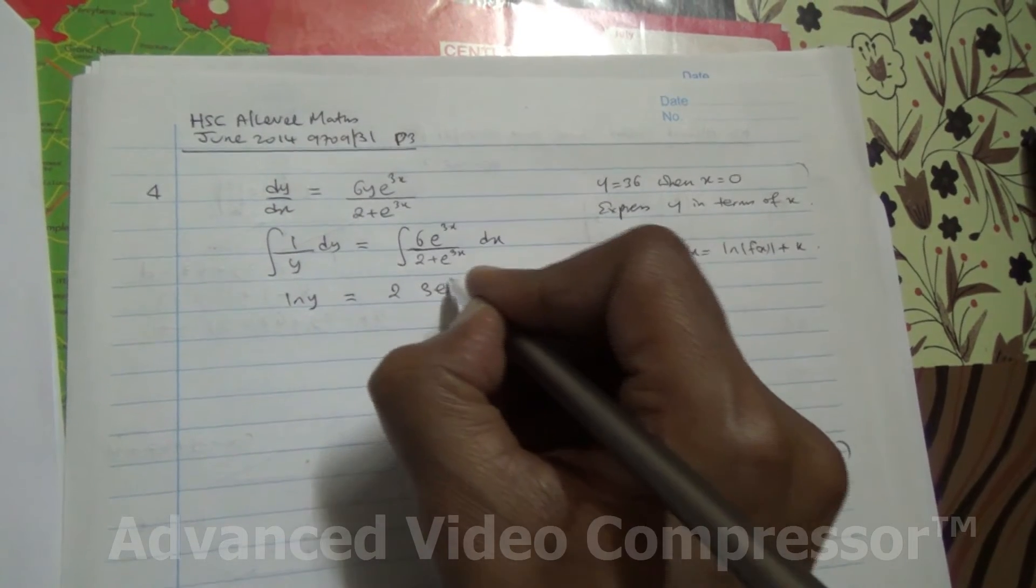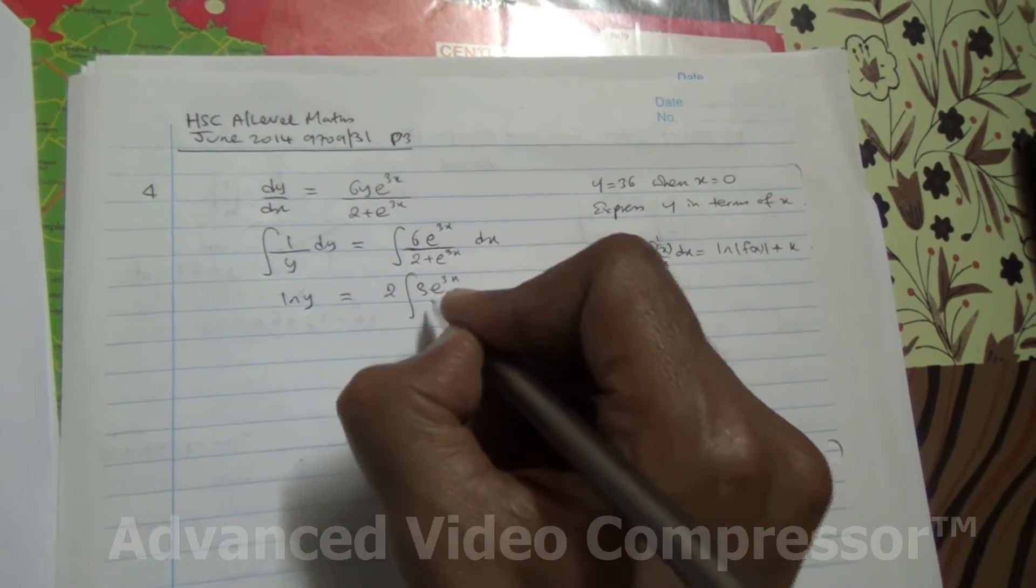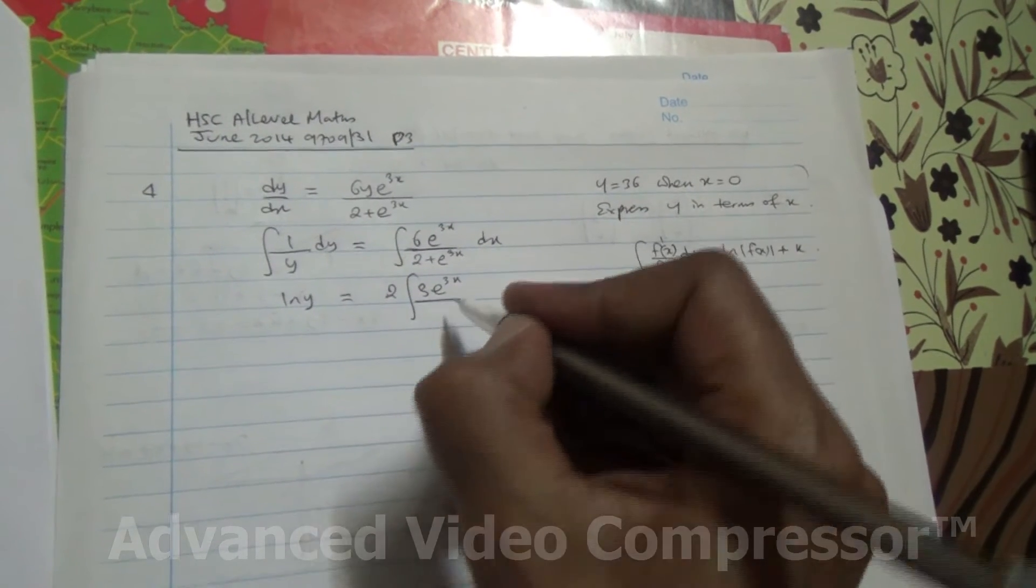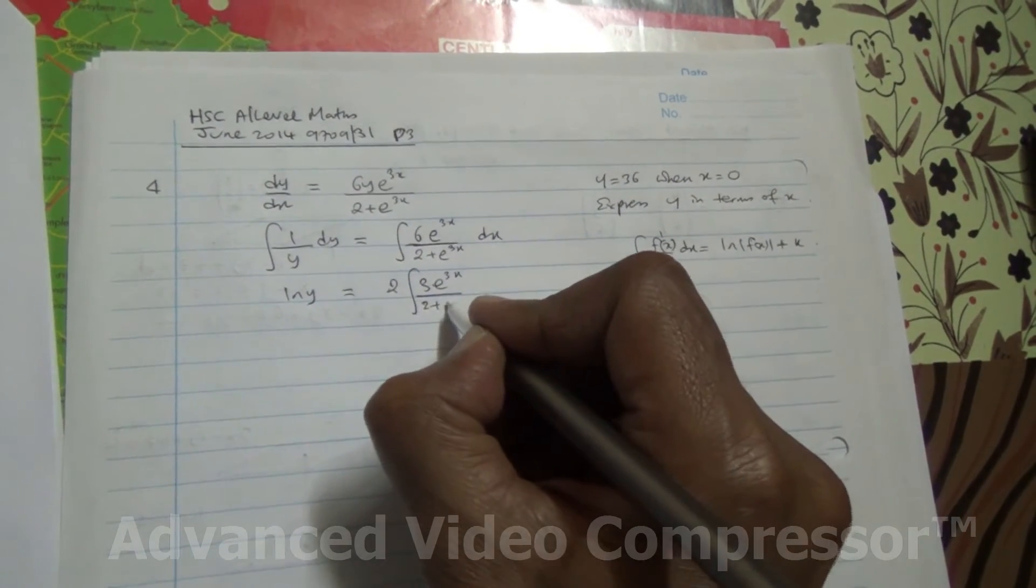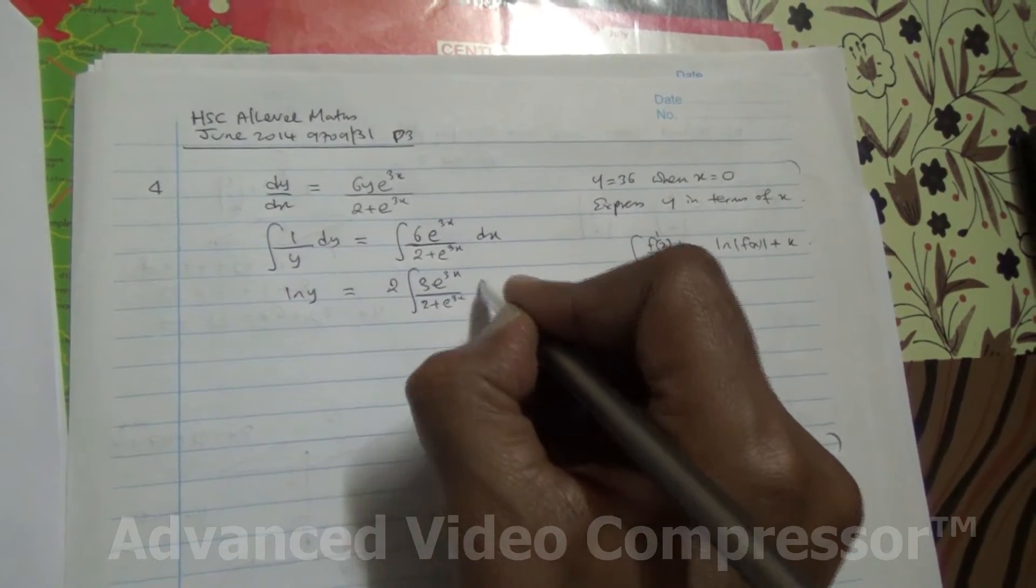I can put 3 inside e to the 3x. Because that's still the same. 3 times 2 is 6, alright? And therefore, we've got it over 2 plus e to the 3x dx.